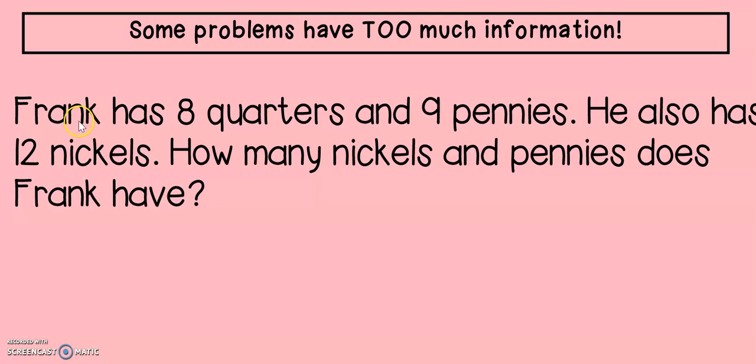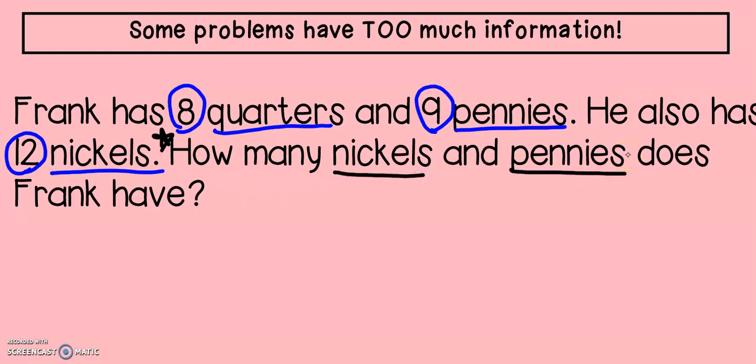Let's try another problem. Frank has eight quarters and nine pennies. He also has twelve nickels. How many nickels and pennies does Frank have? Hmm, this one is sort of like the last one. I have three numbers. Let me double check in my question to see if I need all of it. How many nickels and pennies does Frank have? So I only need nickels and pennies. That means I can get rid of my quarters because I don't need that number.